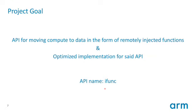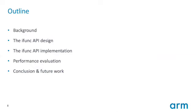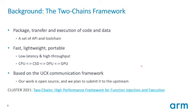This work is part of the 2Chainz framework, which is designed to package, transfer, and execute code and data in distributed environments. The 2Chainz framework aims to be fast, lightweight, and portable. It has its own API and will be based on UCX to support CPUs, CSDs, DPUs, and GPUs. If you're interested in learning more, you can check the 2Chainz paper published at Cluster 2021, which gives more detail about the scope of the project.